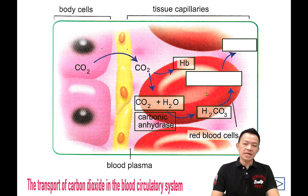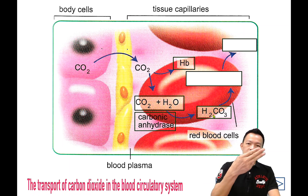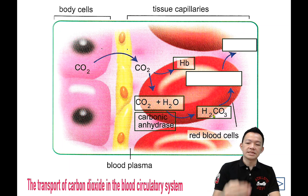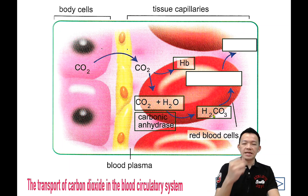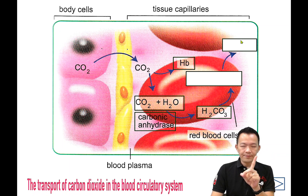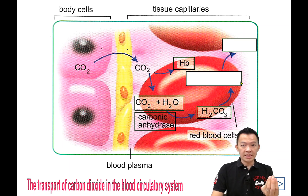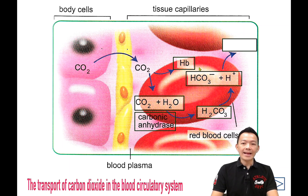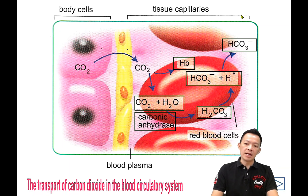But what happens to this carbonic acid? This acid is going to dissociate to produce two types of ions. One of them is called hydrogen ions, and another one will be bicarbonate ions. So carbonic acid dissociates into hydrogen ions and bicarbonate ions. These two ions will then diffuse out of the red blood cells and dissolve inside the blood plasma.